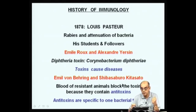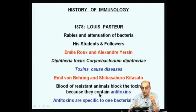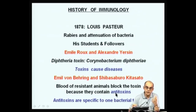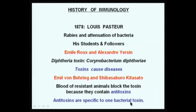The blood of resistant animals — those not killed by the toxin — had the ability to neutralize the toxic effect of the toxin when administered to a naive animal. They said this phenomenon of neutralizing the effect of the toxin was actually because they had antitoxins. These antitoxins had the property of neutralizing the toxic nature of the toxin produced by these bacteria, and they found these antitoxins were very specific to each bacterial strain.